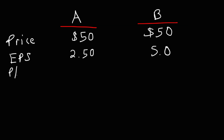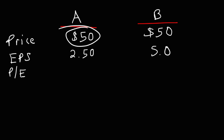What is the PEG ratio for these two companies? The PE ratio is equal to the price of the stock divided by the earnings per share. So 50 divided by 2.5 equals 20 for Company A. And for Company B, the PE ratio is 50 divided by 5, which is 10.